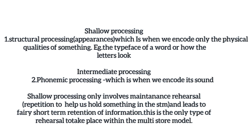Shallow processing takes two forms: structural processing and phonemic processing. Structural processing is when we encode only the physical qualities of something — for example, the typeface of a word or how the letters look, like spelling C-A-T for the word 'cat'.